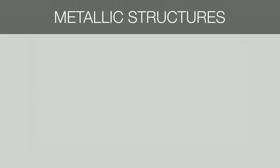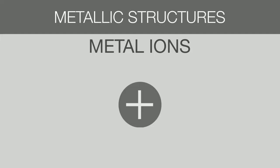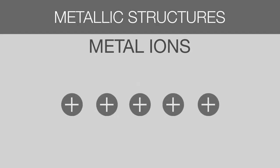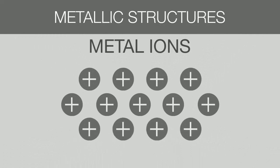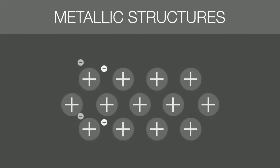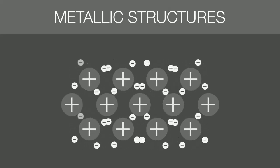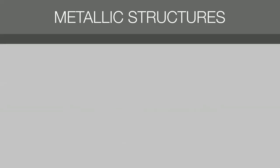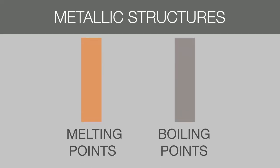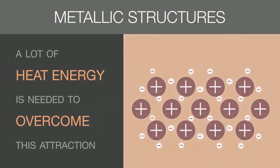In metallic structures, there are only metal ions arranged side by side in a regular repeating pattern. The free-floating electrons act like a glue and hold the structure in place. This is a very strong attraction and explains why metals have high melting and boiling points. A lot of heat energy is needed to overcome this attraction. This is also why metals are very good conductors of heat.